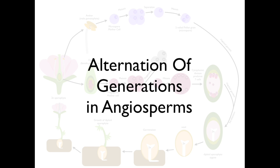Thank you for watching this video on the alternation of generations with a focus on angiosperms. The next part will go into more detail into the cycle and the production of gametes. The script for this video can be found in the description below. Thank you.